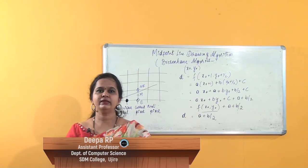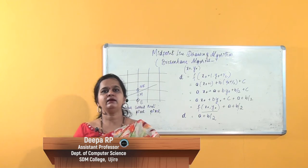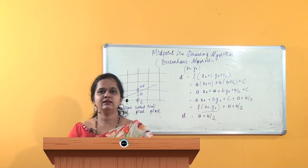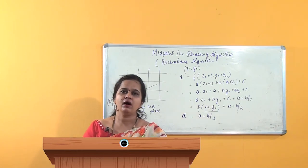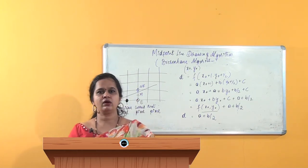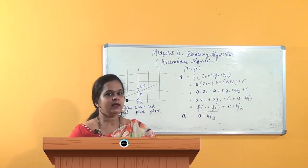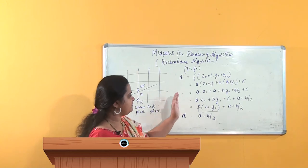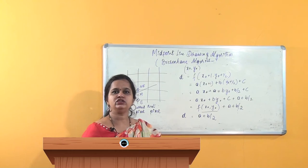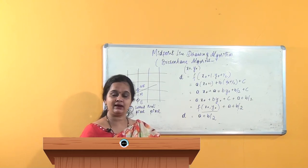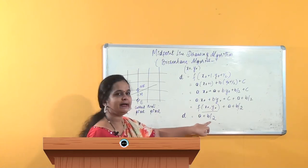Hello students. We are continuing with the concept of the midpoint line drawing algorithm. As you have seen in all the previous parts, we are coming out step by step with the derivation of how to write the algorithm, or how to come out with the steps to write the algorithm by using the decision variable. The previous thing that you have, if you remember, is the d_initial — the d that we have to calculate when I start from the point x₀ and y₀, which will be a plus b by 2.